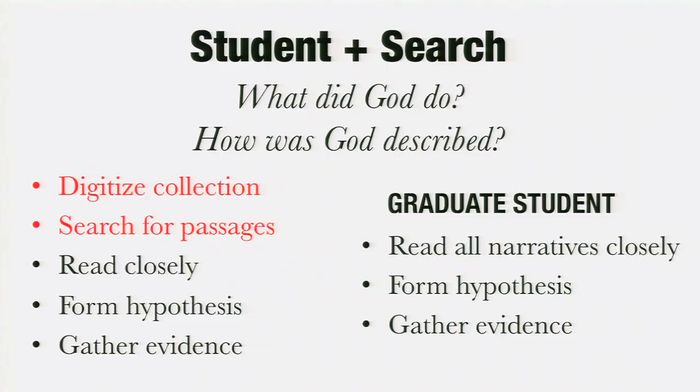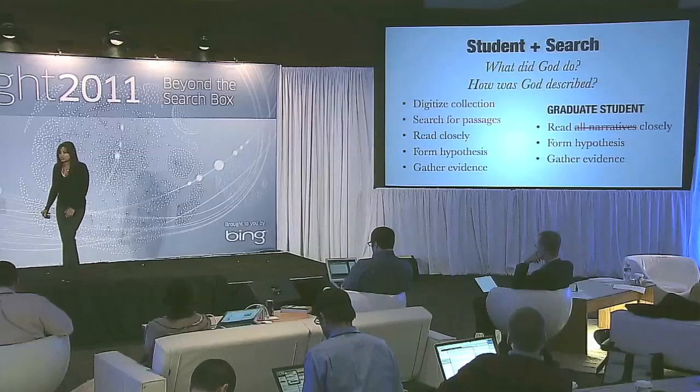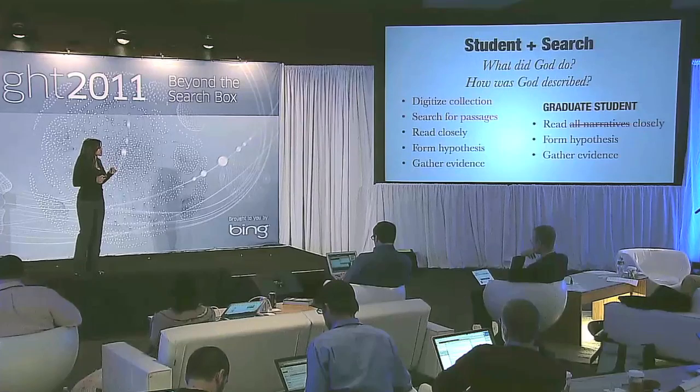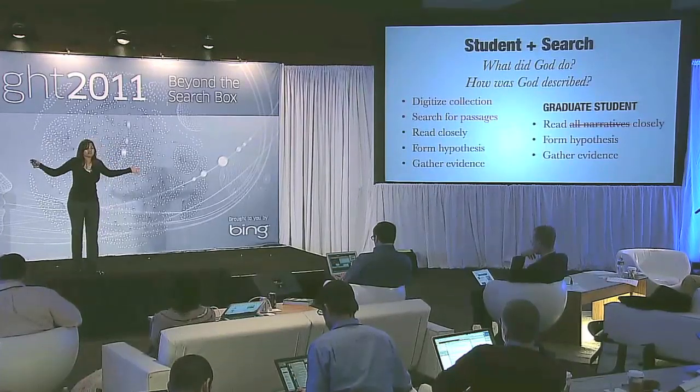Either way, this is an improvement over stumbling through the entire collection. Instead of reading all the narratives closely, you only have to read 37 pages of search results. To get even a vague sense of what did God do and how is God described, instead of taking five months as it would have previously, the graduate student can now do it in maybe a week or five days. But the graduate student still has to spend a lot of time reading each page returned.